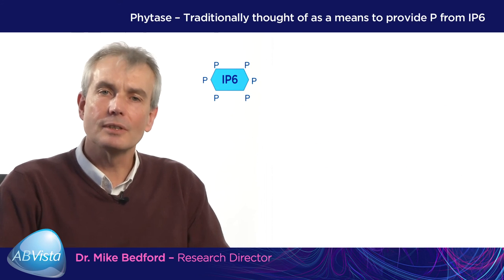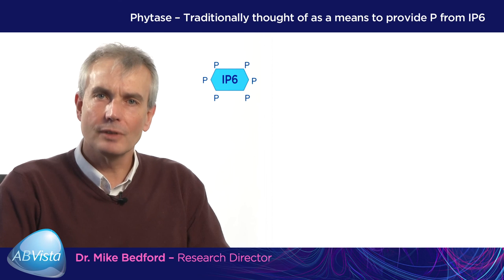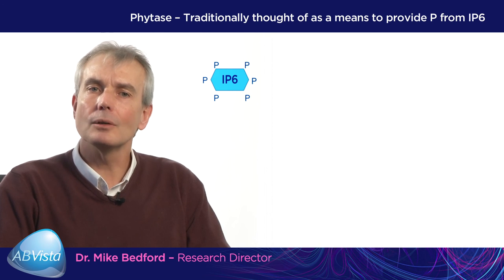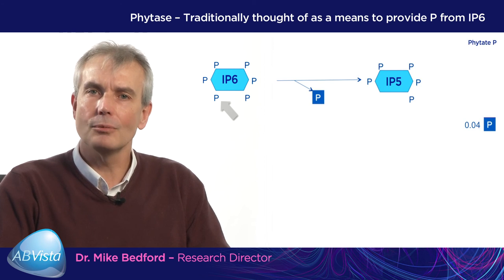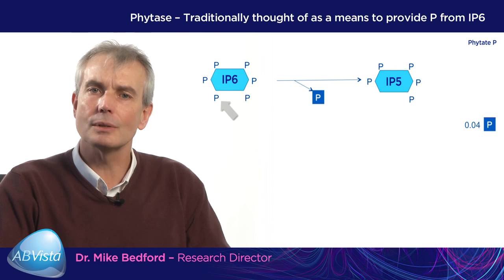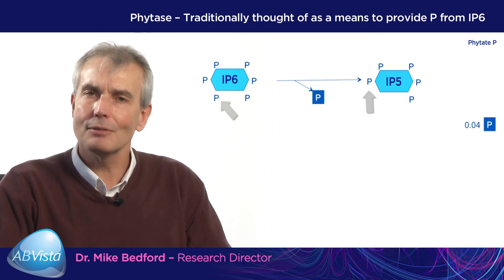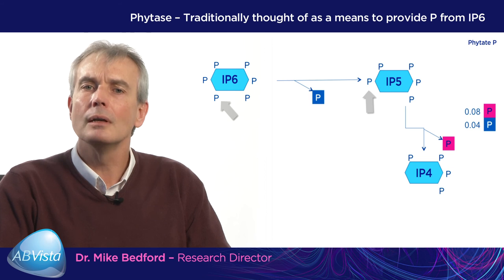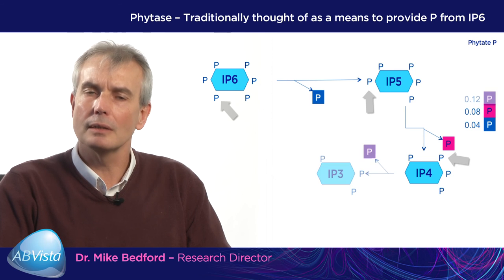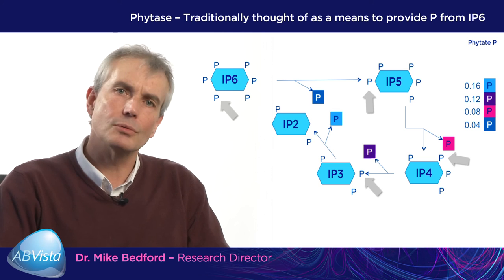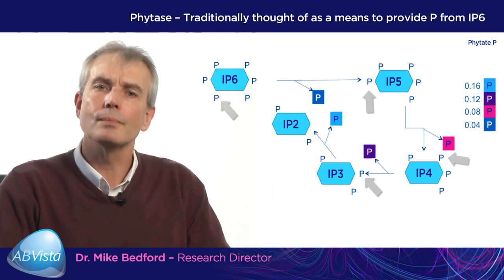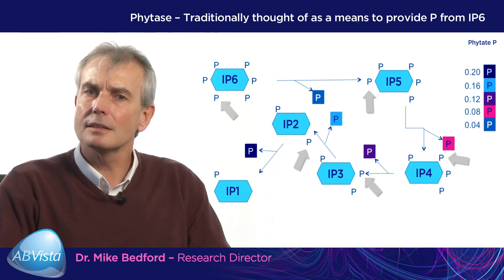Phytases have traditionally been thought of as a means to provide phosphorus from IP6. All phytases are called phytases because they attack IP6 and make from it IP5, which is a new substrate which phytases continue to attack. IP5 is then made into IP4, another phosphate removed and you generate IP3, and another phosphate is removed and you generate IP2. The final product of a phytase is IP1.